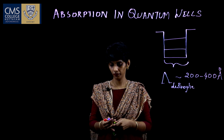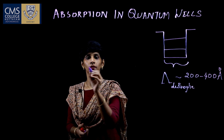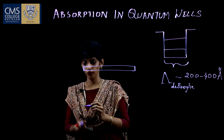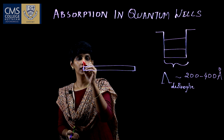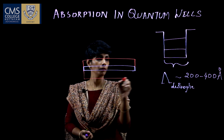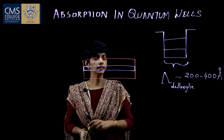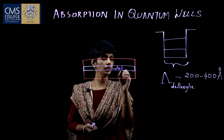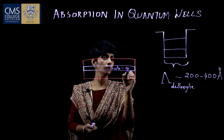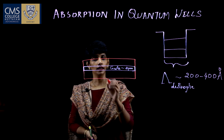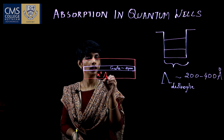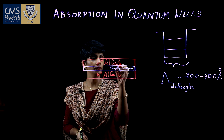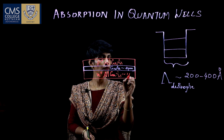Now let us see how a quantum well structure is formed. A thin layer of semiconductor having a narrow band gap is sandwiched between two different semiconductors having a wider band gap. Let this thin layer be gallium arsenide, with a thickness of approximately 0.2 micrometer. The two surrounding layers are heavily doped N-plus aluminium gallium arsenide and P-plus aluminium gallium arsenide, each having a thickness of approximately 1 micrometer.